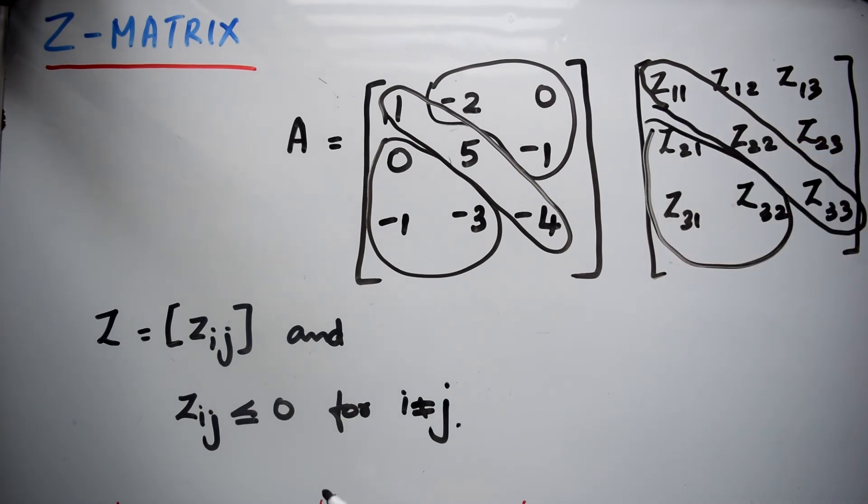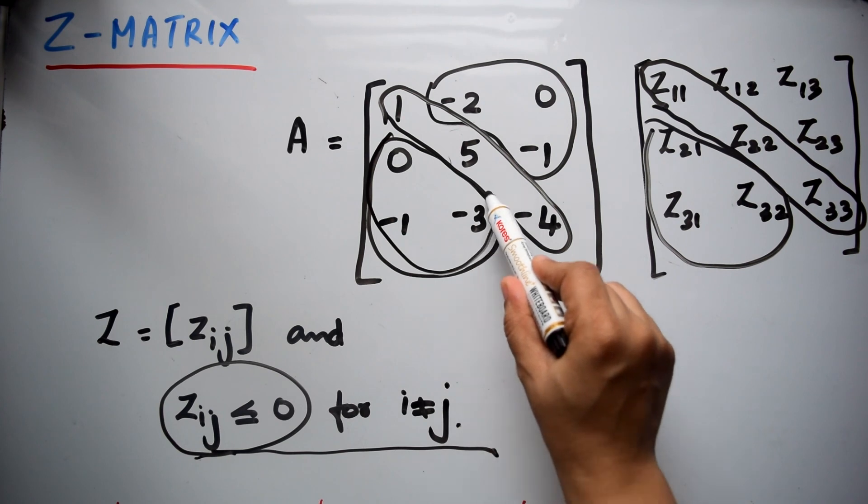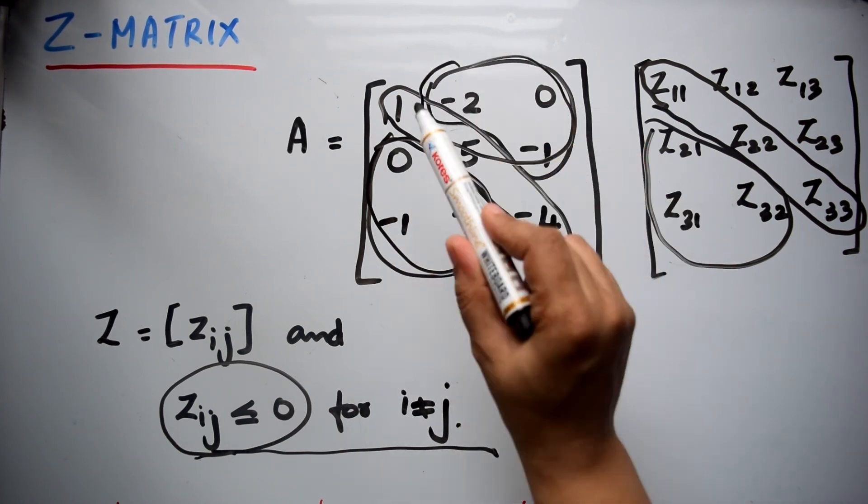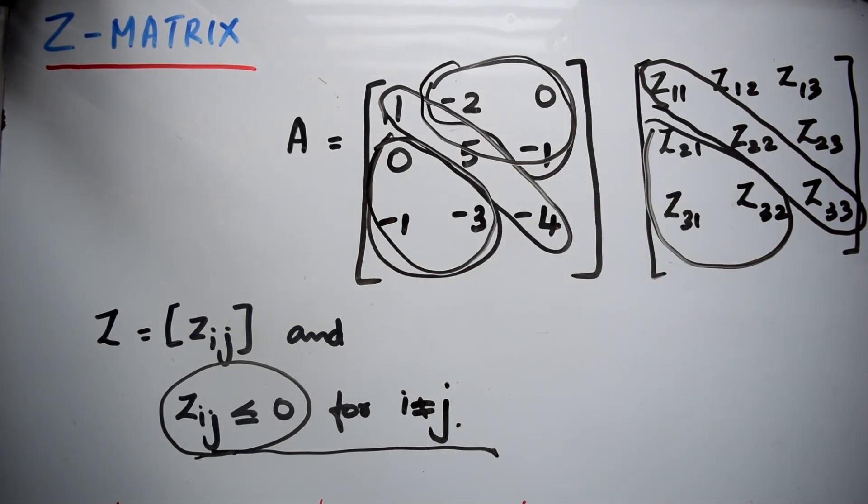Here the condition says Zij less than or equal to zero for i not equal to j. i not equal to j means off-diagonal elements, so these elements should be less than or equal to zero. That is the condition for Z matrix.